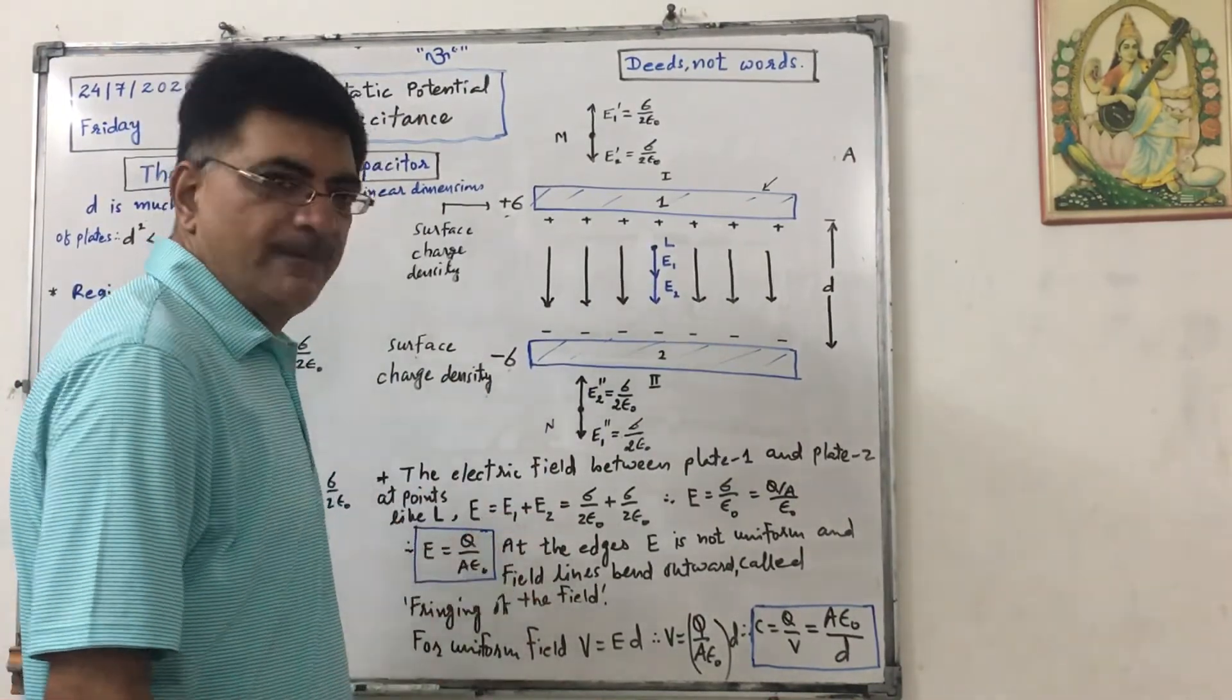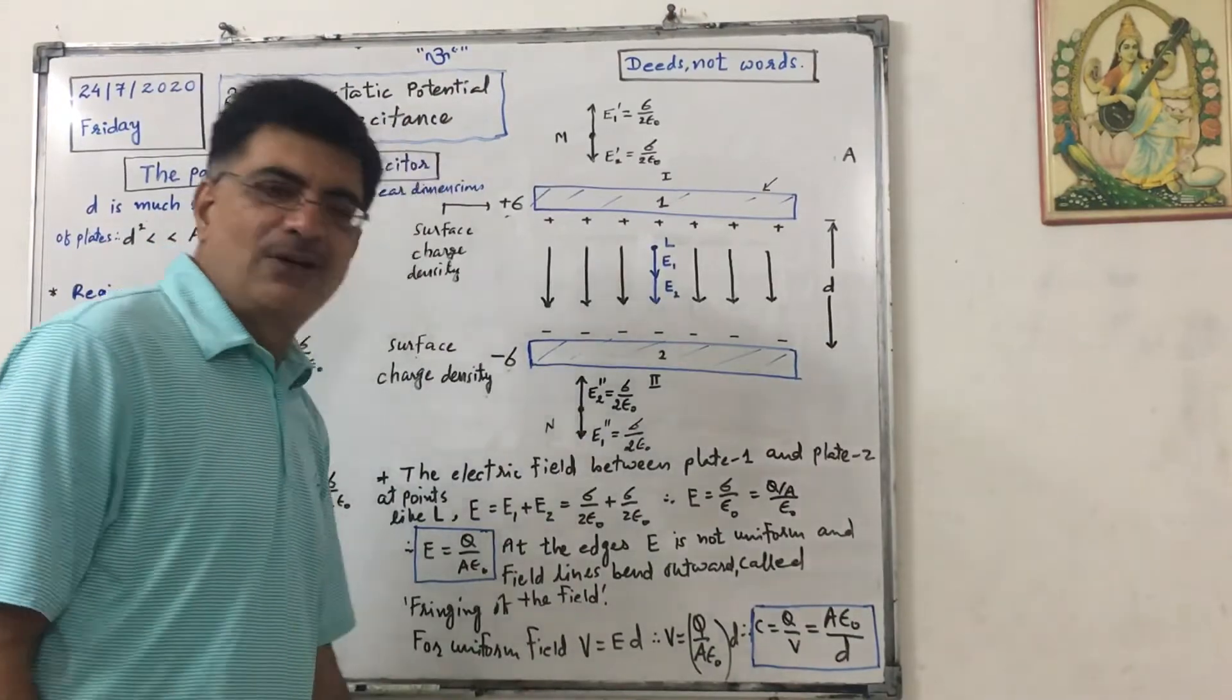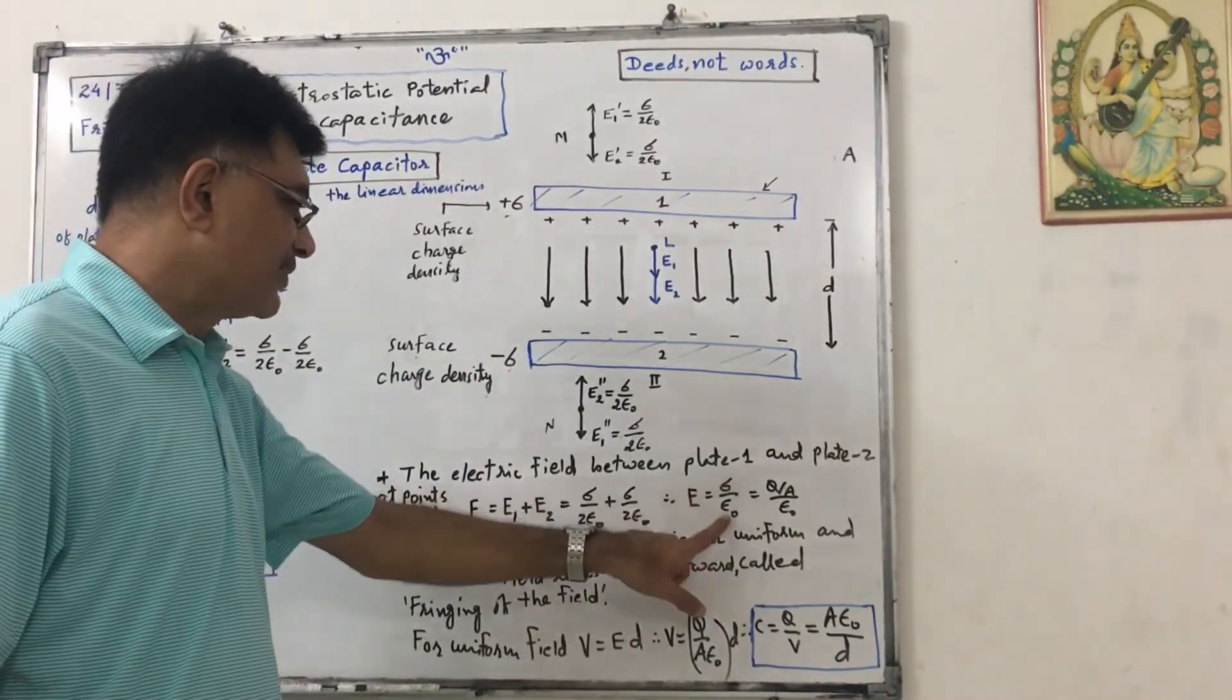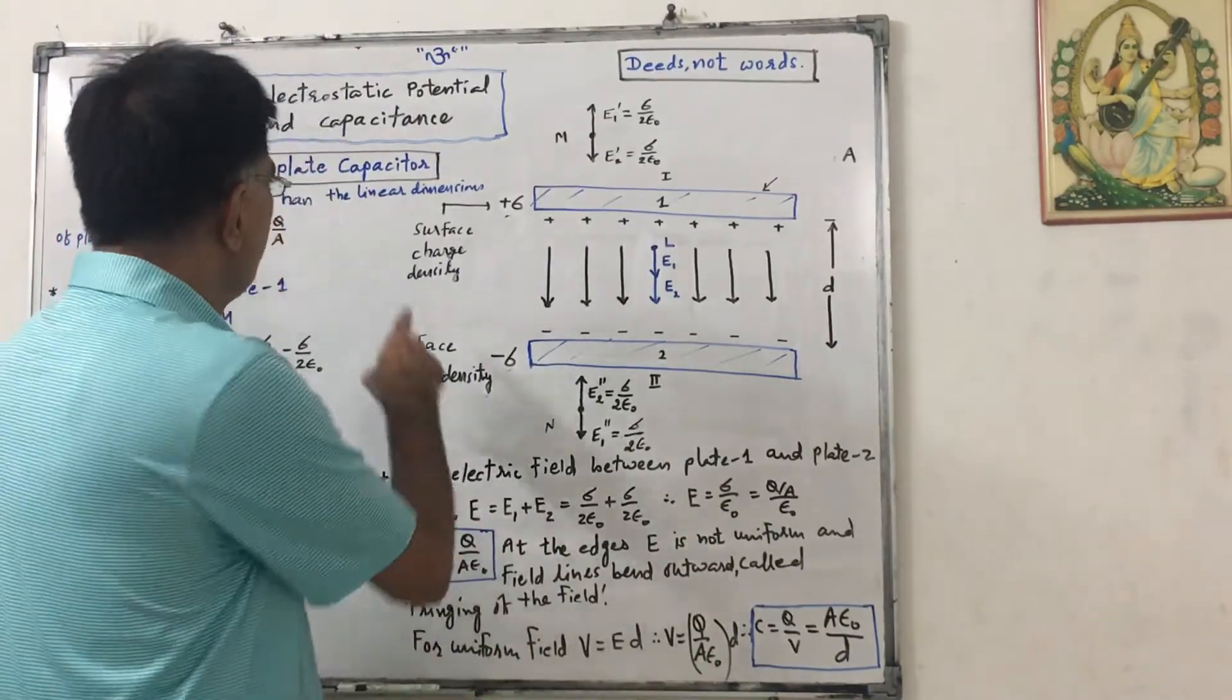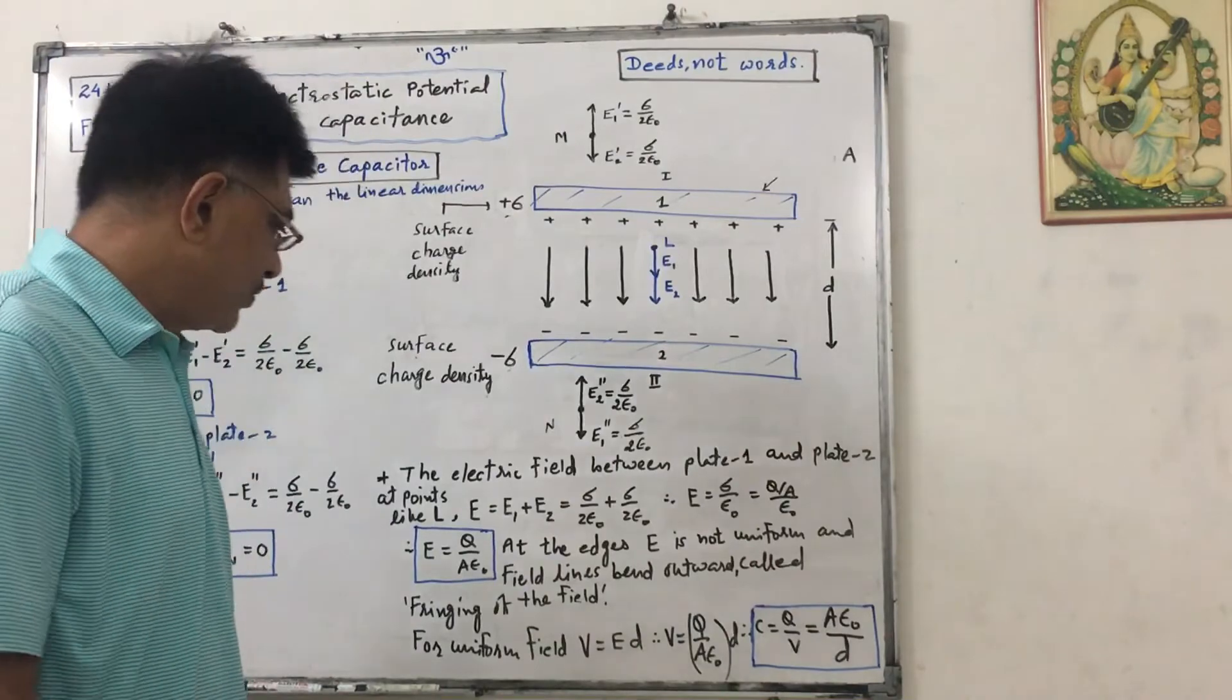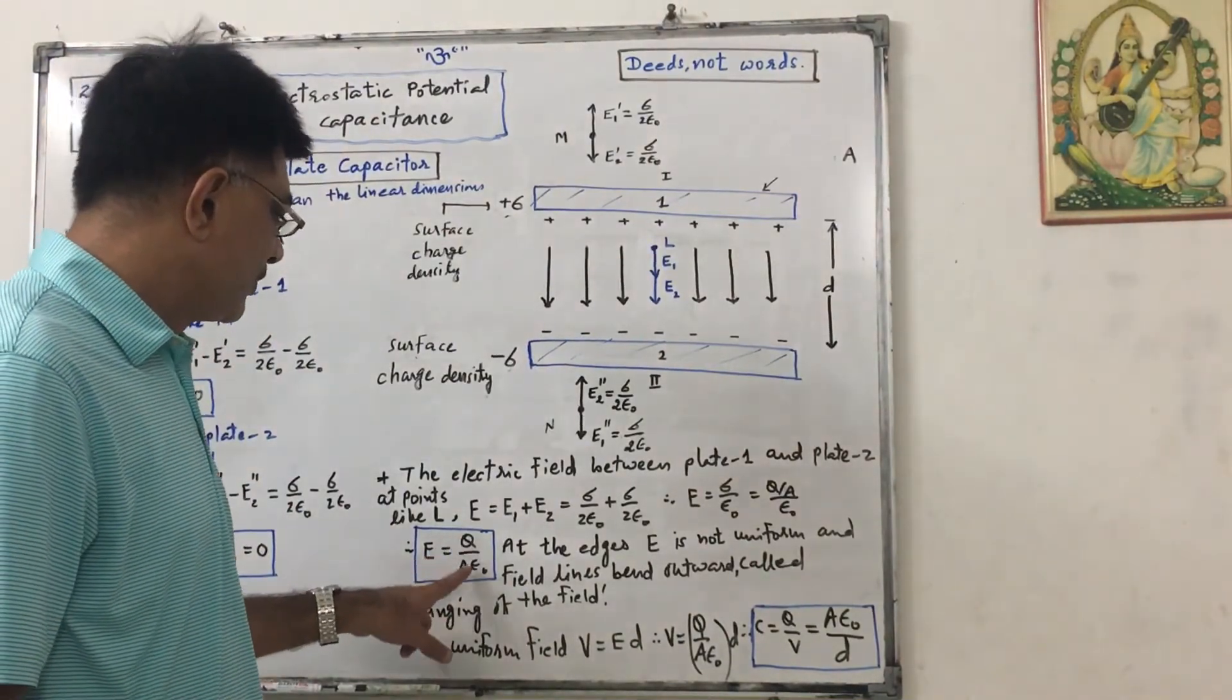So that will be E1 plus E2, that will be sigma upon two epsilon naught plus sigma upon two epsilon naught. So it will be sigma upon epsilon naught. But we know that sigma equals to Q by A. So Q by A upon epsilon naught. Here E will be equal to Q upon A epsilon naught.